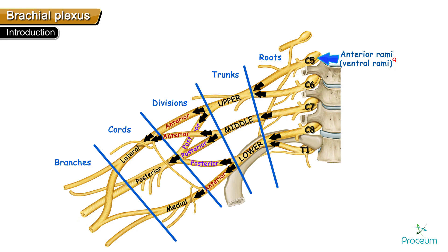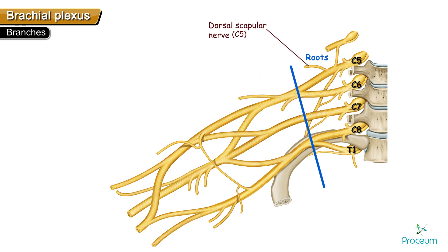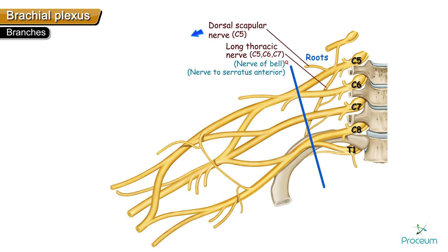Branches from the brachial plexus can arise from the roots, trunks, and cords, but there are no branches from the divisions. The branches from the roots are the dorsal scapular nerve, which arises from the C5 root, and the long thoracic nerve — also called the nerve of Bell or the nerve to serratus anterior — which arises from the C5, C6, and C7 roots.